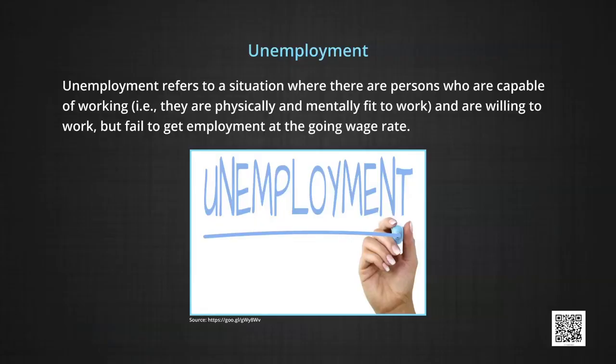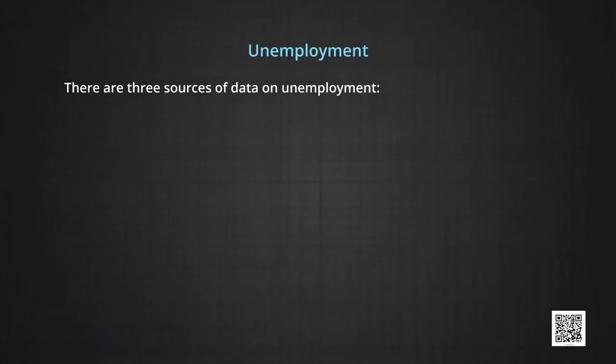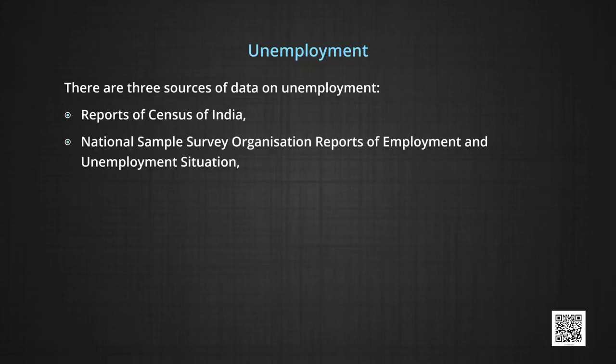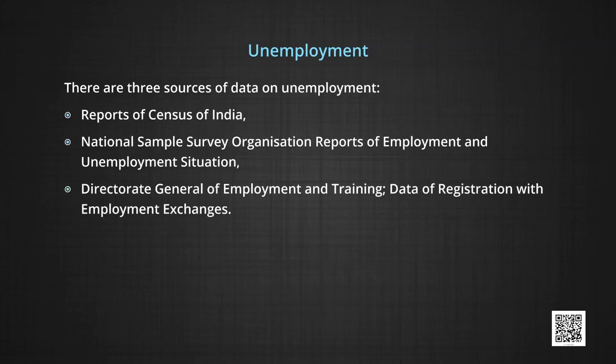There are a variety of ways to identify an unemployed person. Economists define an unemployed person as one who is unable to get employment of even one hour in a half day. There are three sources of data on unemployment: reports of the Census of India, NSSO reports on employment and unemployment situations, and the Director General of Employment and Training data from registration with employment exchanges. Though they provide different estimates, they do provide attributes of unemployment in general and the variety of unemployment prevailing in our country.